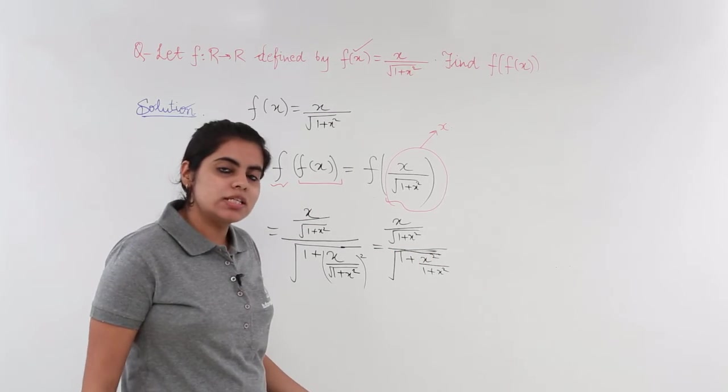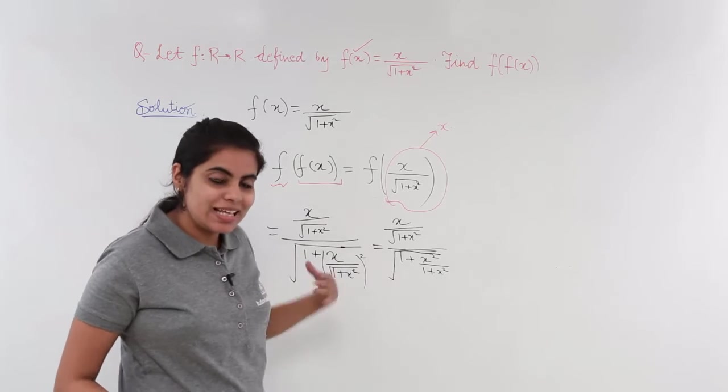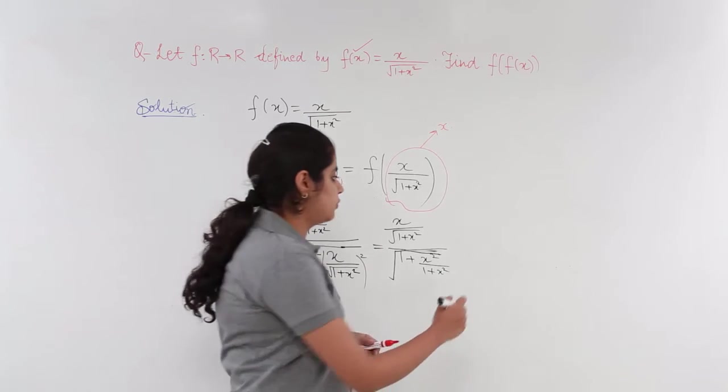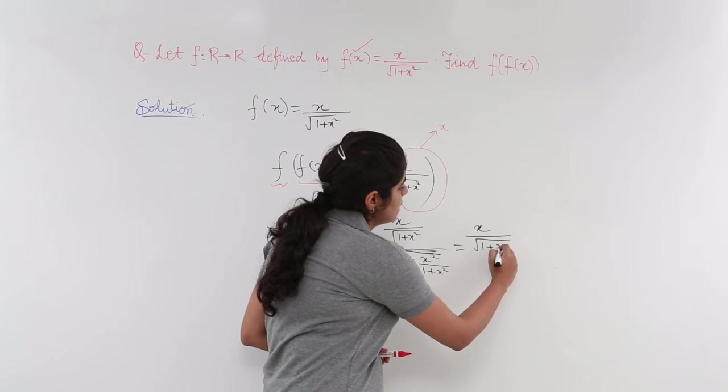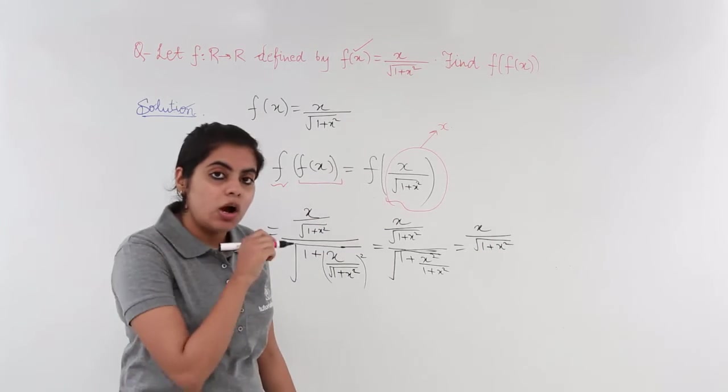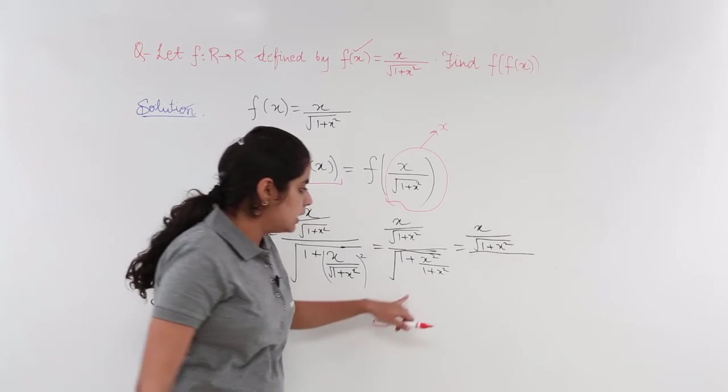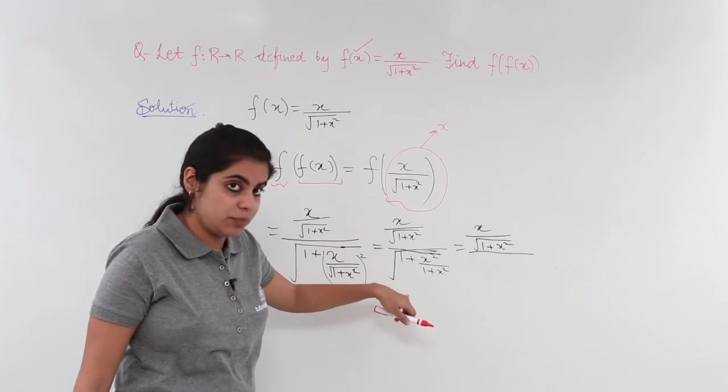Now, only simplification is left. We need to just take the LCM. Do the necessary stuff. Let's go there. x upon under root 1 plus x square. Whole upon. We did the whole upon. Things get changed to LCM. When we take the LCM,